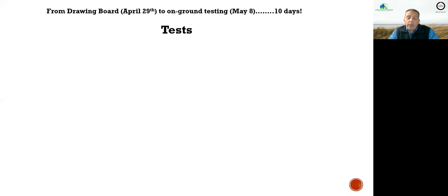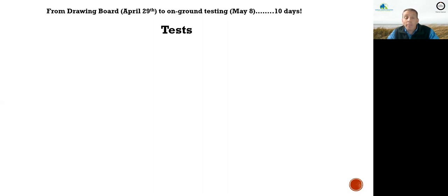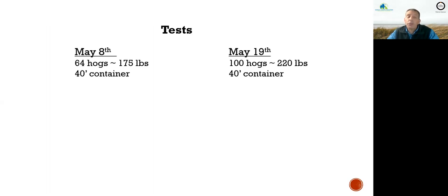We went from the drawing board on April 29th, 2020 — COVID started becoming much more prominent around the March timeframe, which is when we started getting worried. By May 8th, just 10 days later, we conducted our first test. On May 8th we tested with 64 pigs at about 175 pounds using a 40-foot container as one of our first units. Then on May 19th we did 100 hogs in that 40-foot container at about 220 pounds.